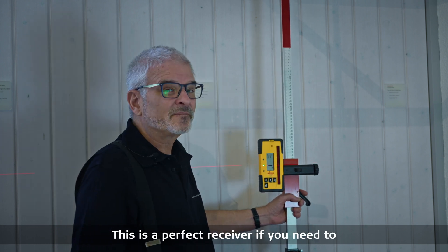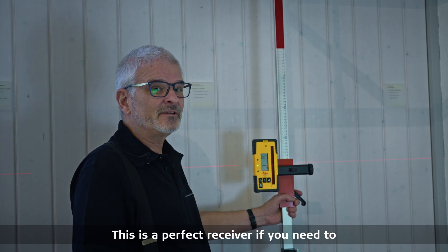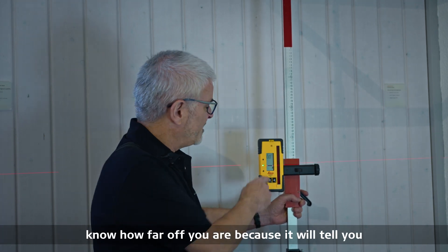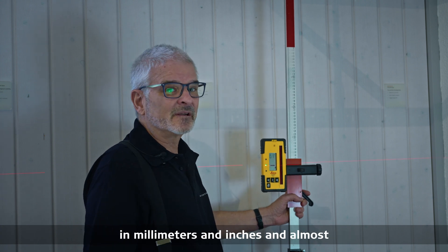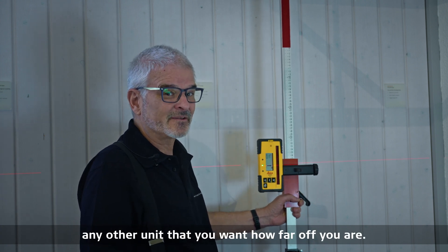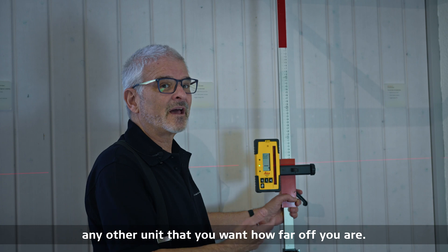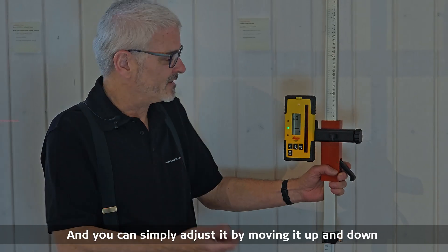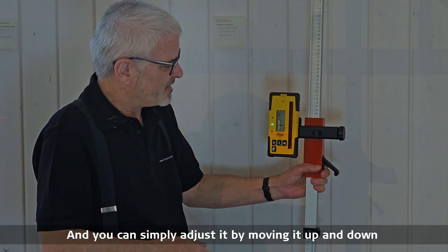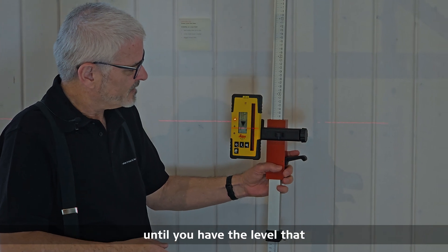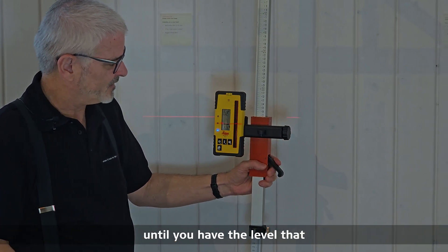This is a perfect receiver if you need to know how far off you are, because it'll tell you in millimeters and inches, almost in any other unit that you want. You can simply adjust it by moving it up and down until you have the level that you want.